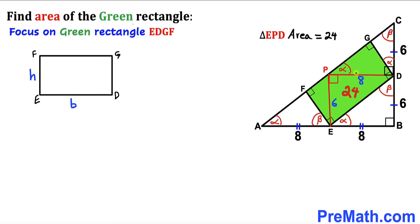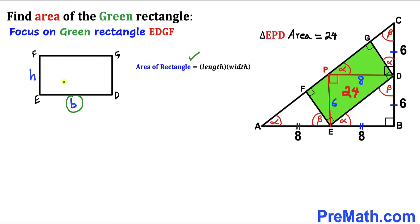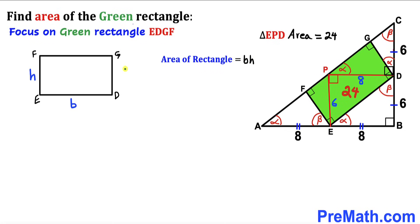Here's our next step. Let's focus on the green rectangle EDGF. Let's assume that its length is B (that also stands for base) and its width is H (that also stands for height). Recall the area of a rectangle formula: area equals length times width. In our case, our length is B and our width is H, so the area of this rectangle is going to be B times H.